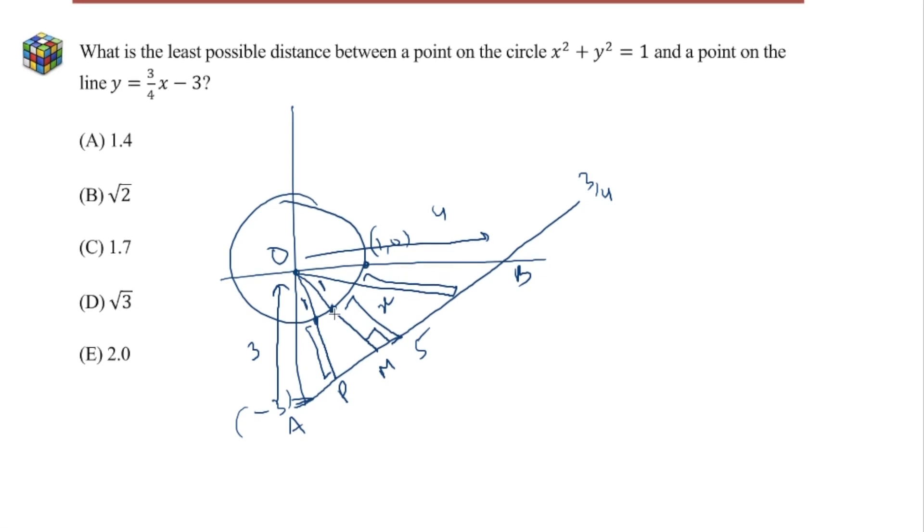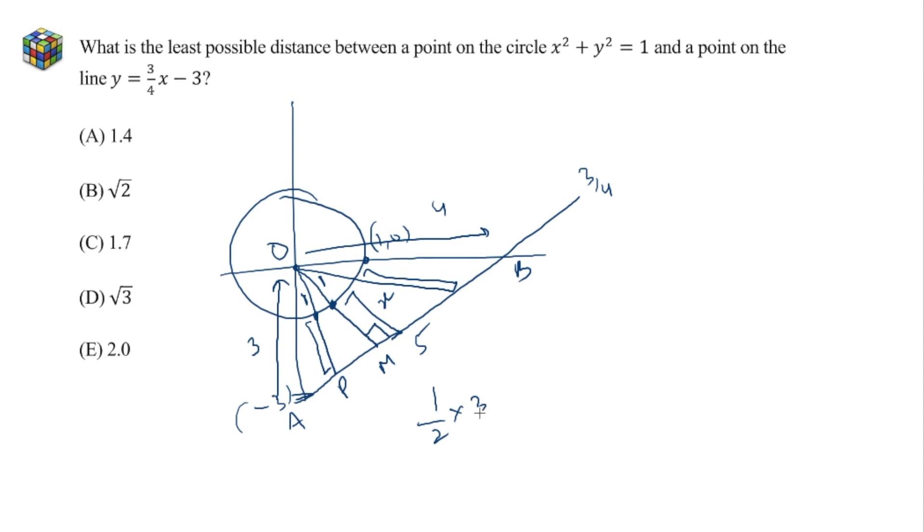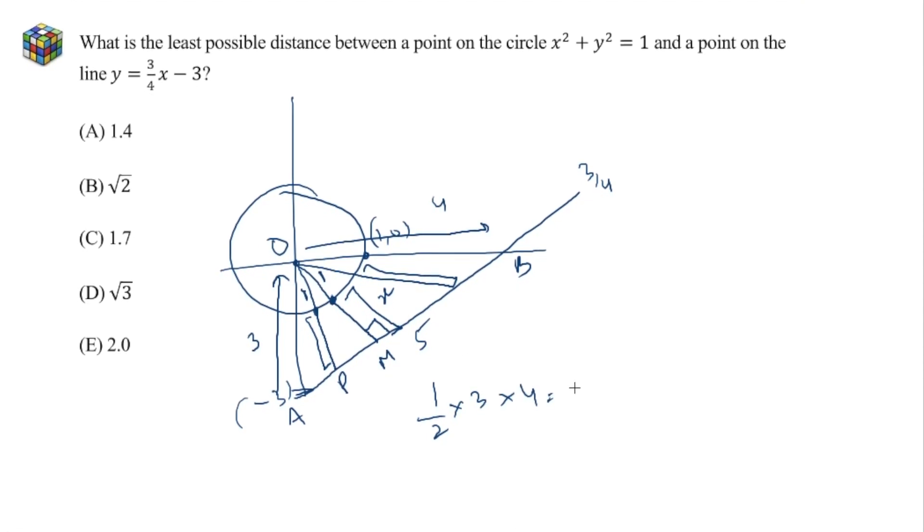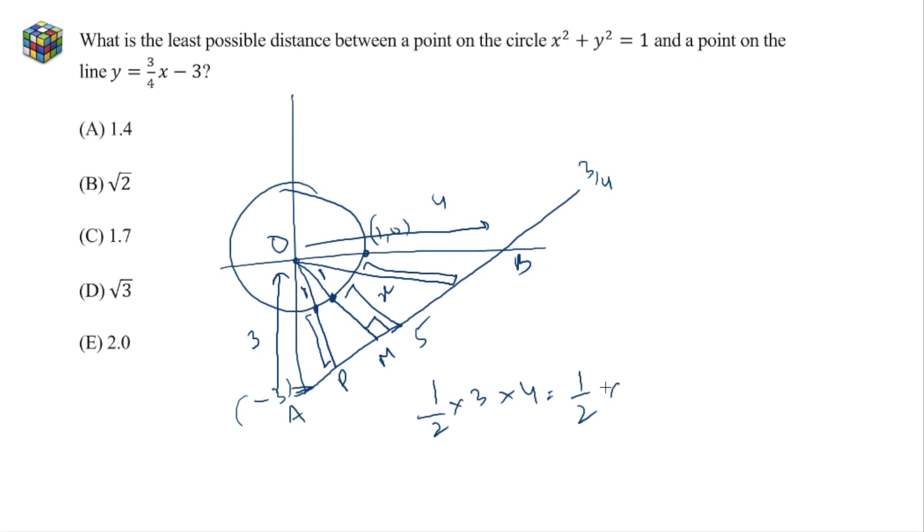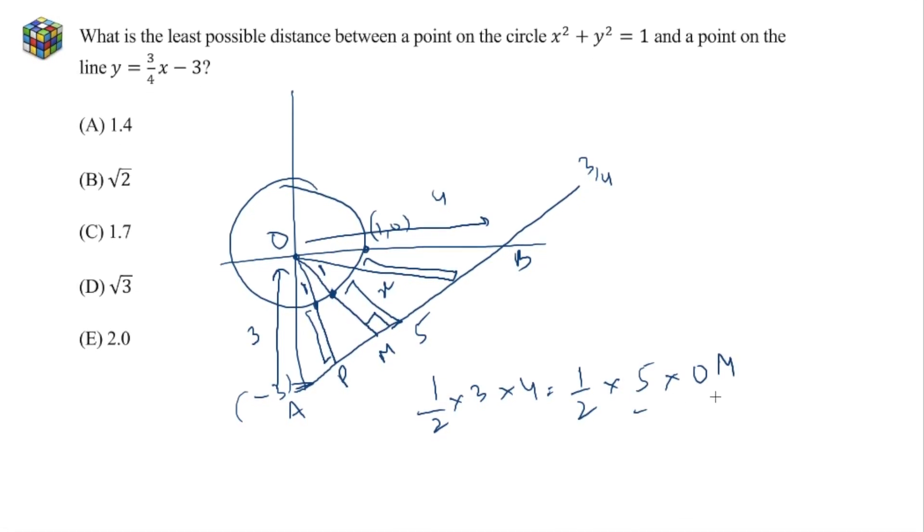So, all we have to do is find the length of OM. How can we do that? We can say half into 3 into 4, the area of the triangle OAB is equal to half into 5 into OM. This is the base, this is the altitude.